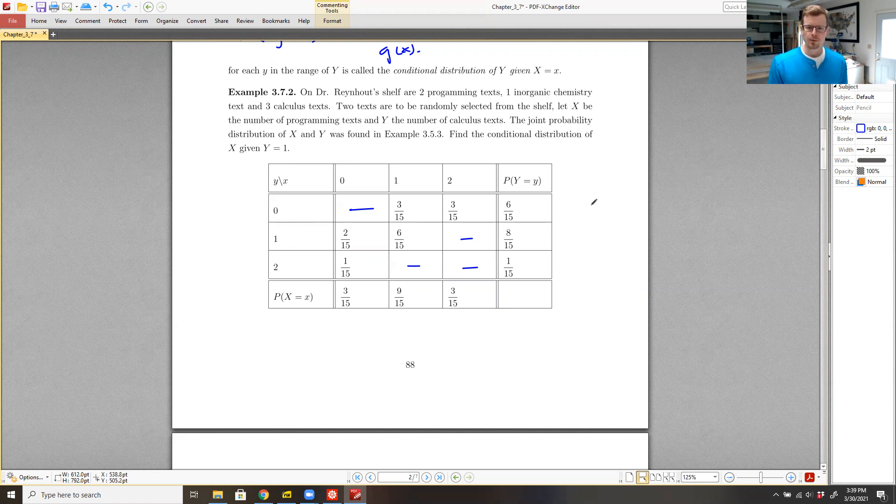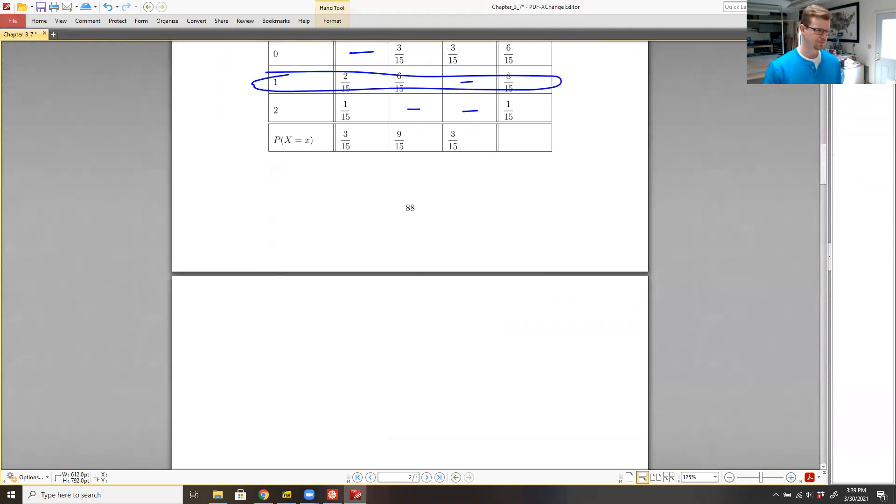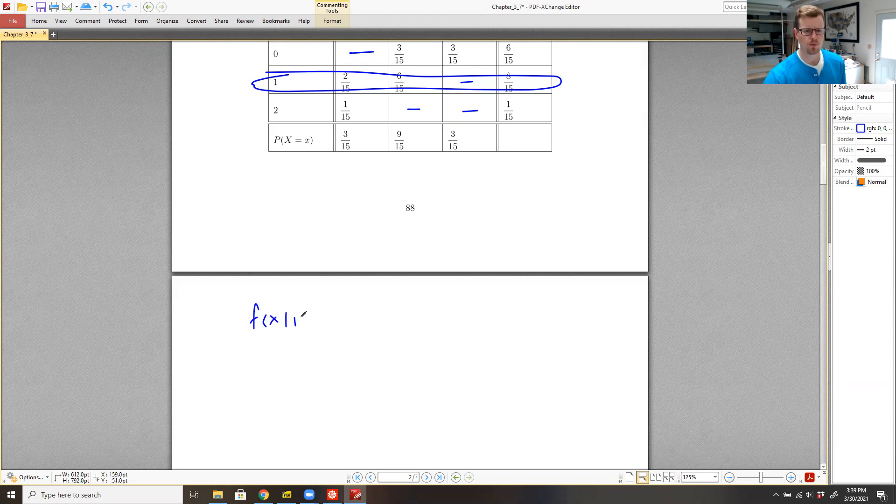And what we'd like to do is we would like to find the conditional distribution of x, given that y is equal to one. So essentially, all that we're doing is restricting our view to this particular row.